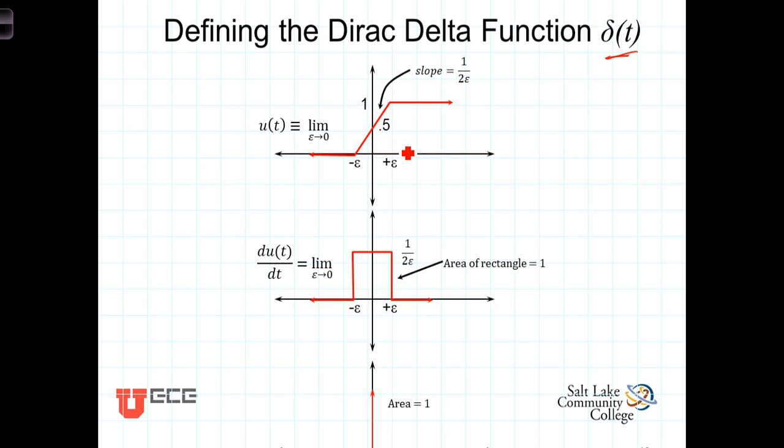Since this function is piecewise continuous, we can define the derivative for it over each of those piecewise sections. So the derivative here is just zero, the derivative here is zero, but in between the two epsilons, the derivative is the slope of this straight line.